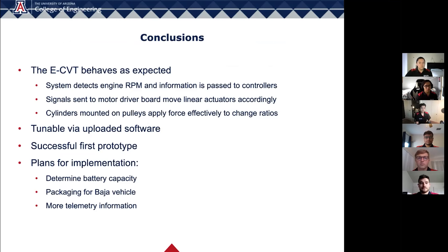Thank you, Jacob. In our testing, we found that the ECVT behaves as we expected. A few of the system requirements that it passes include: the current sensor mounted on the spark plug is configured to effectively detect the engine RPM and pass this information to the main microcontroller. Another system requirement is that the microcontroller sends signals to the motor driver board, which moves the linear actuators as dictated by the algorithm uploaded to the microcontroller. A third system requirement is that the concentric slave cylinders are mounted to the pulleys and move them effectively in and out when hydraulic pressure is applied by the linear actuators. The movement of the actuators therefore determines the ratio of this ECVT, and this successful first prototype proves the viability of adjusting software parameters to affect CVT driving characteristics.